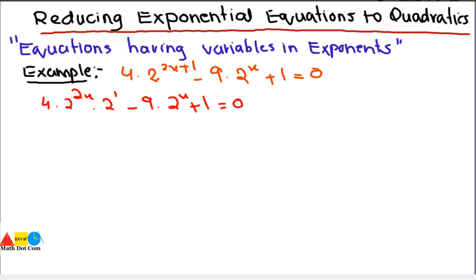By doing this we have uniformity in the form — we have 2^(2x), 2^(2x), and 2, all with base 2. Substitution is only possible when the bases are the same. Here all bases are 2, so we can make the substitution.